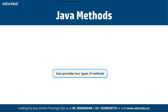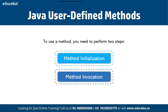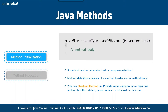Talking about Java methods — what is a Java method? A method is a set of code that is grouped together to perform a specific operation. A method must be written inside a class, and each method has its own signature. Java provides two types of methods: first is predefined or standard library methods, and second is user-defined methods. To use a method, you need to perform two steps: method initialization and method invocation. A method can be parameterized or non-parameterized.